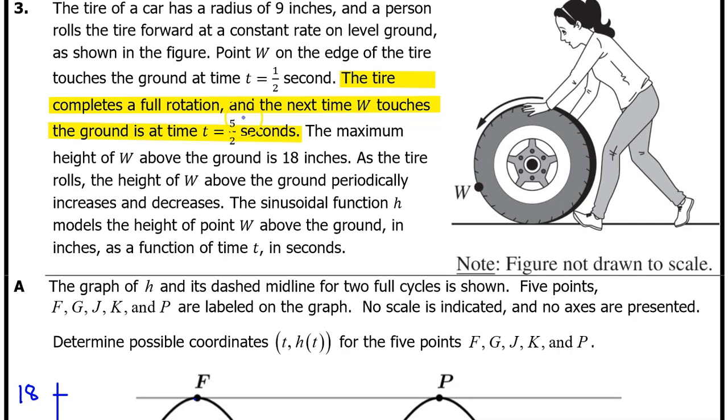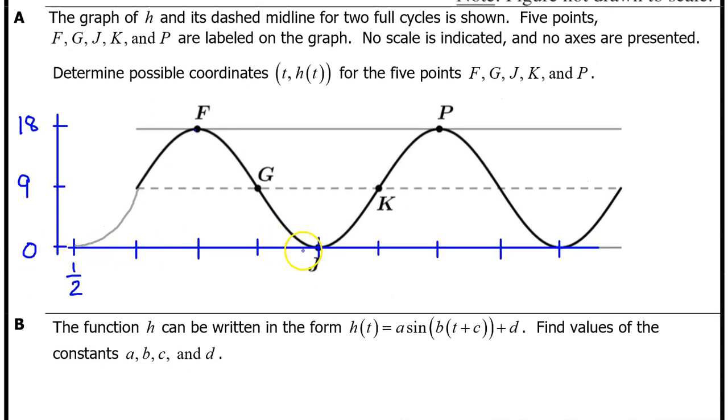After t equals 1 half, we are told that the tire completes a full rotation, and the next time W touches the ground is at t equals 5 over 2 seconds. So, the next low point will be t equals 5 halves. We can find the period by subtracting these two input values. 5 halves minus 1 half is equal to 4 halves, which is equal to 2. So, the period is 2. Each one of these spaces represents a quarter of the period. So, if the period is equal to 2, dividing both sides by 4 will give me 1 quarter of the period.